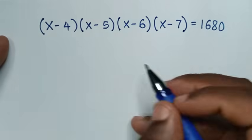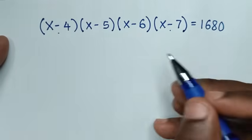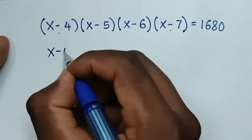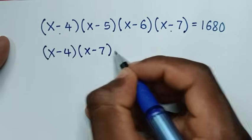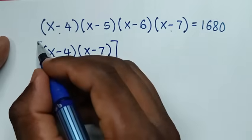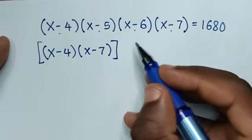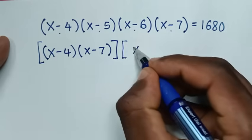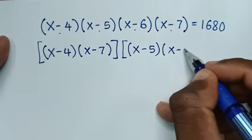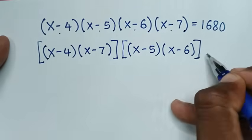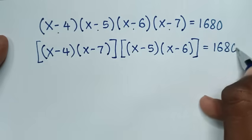In the first step, we take (x minus 4) times (x minus 7) and multiply them together. Then we take (x minus 5) times (x minus 6) and multiply those together, so we have (x minus 4)(x minus 7) times (x minus 5)(x minus 6) equals 1680.